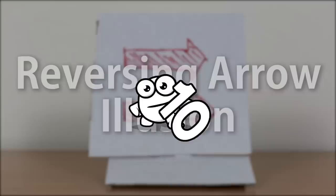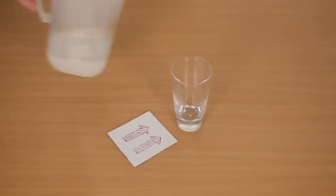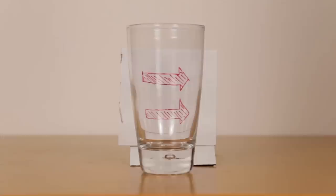Number 10, reversing arrow illusion. For this trick, prepare a clear empty glass, a piece of cardboard with two arrows pointing in the same direction, and some water. Place the empty glass in front of the cardboard so you're still able to see the arrows through the glass. Now, slowly pour water into the glass and watch as the arrows change direction.